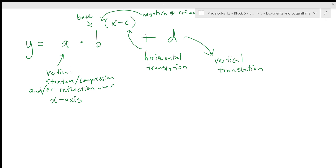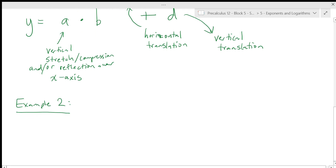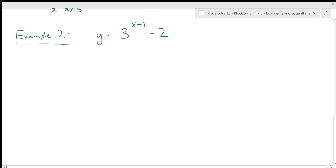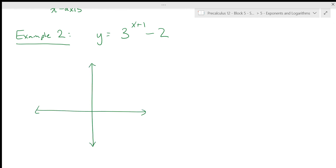For our second example, let's graph a transformed exponential function. We're going to graph y = 3^(x + 1) − 2. We can draw it right here. The first thing we're going to do is look at our important points.